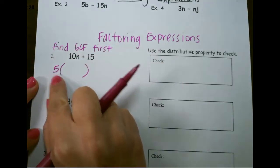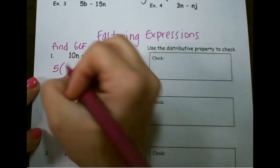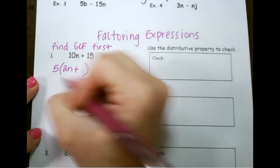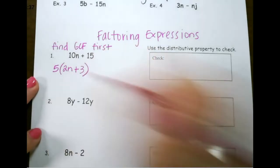What can I multiply 5 by to get 10n? That would give me 2n, there's a plus sign in the middle, I multiply 5 by 3 to get 15.